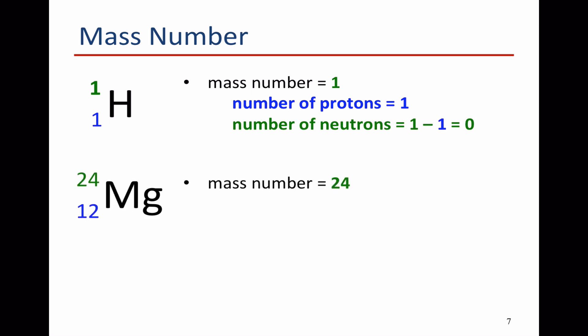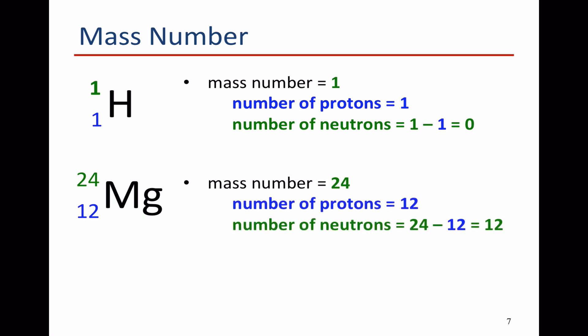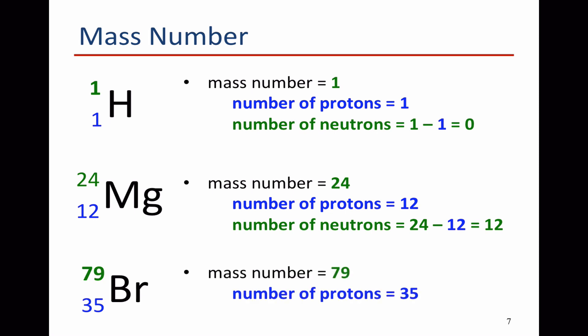Magnesium has a mass number of 24. We worked out that it has 12 protons, so it must have 24 minus 12, which equals 12 neutrons. And lastly, bromine-79 has a mass number of 79. We worked out that it has 35 protons, so the number of neutrons is 79 minus 35, giving it 44 neutrons.